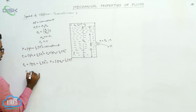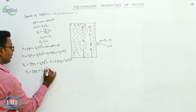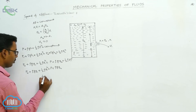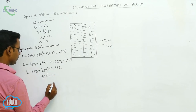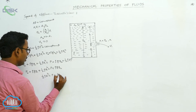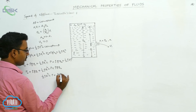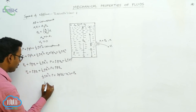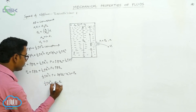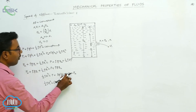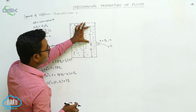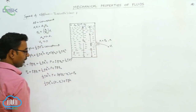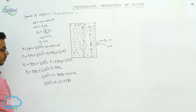Substituting: PA + ρgY1 + ½ρV1² = P + ρgY2 (the V2² term is 0). Rearranging: ½ρV1² = P − PA + ρg(Y2 − Y1). Now Y2 − Y1 equals H, the depth of the orifice below the top surface of the fluid. So ½ρV1² = (P − PA) + ρgH.